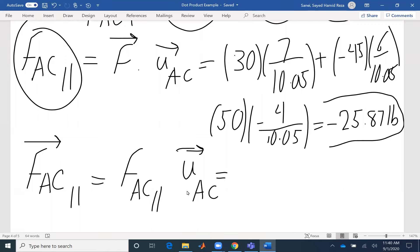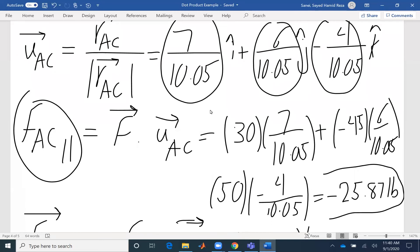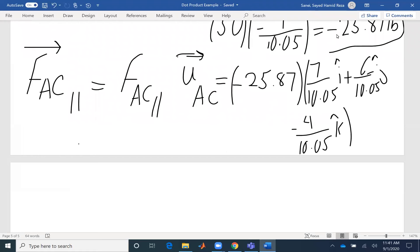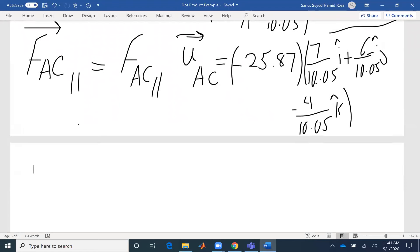What is FAC parallel? I have this 25.87. What is UAC? I have my vector UAC here. 7 over 10.05i. So for these problems, because there are introductory problems, I write all the steps. But later on, we might skip some of the intermediate steps. At the end here, I will get a vector. It's not a dot product. It's a result of a scalar multiplied by a vector is a vector.